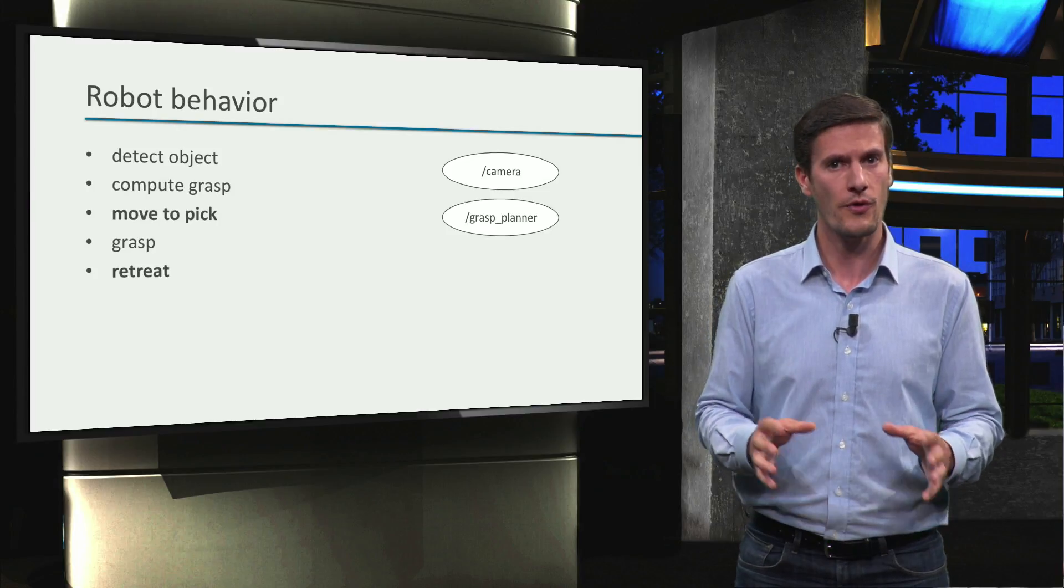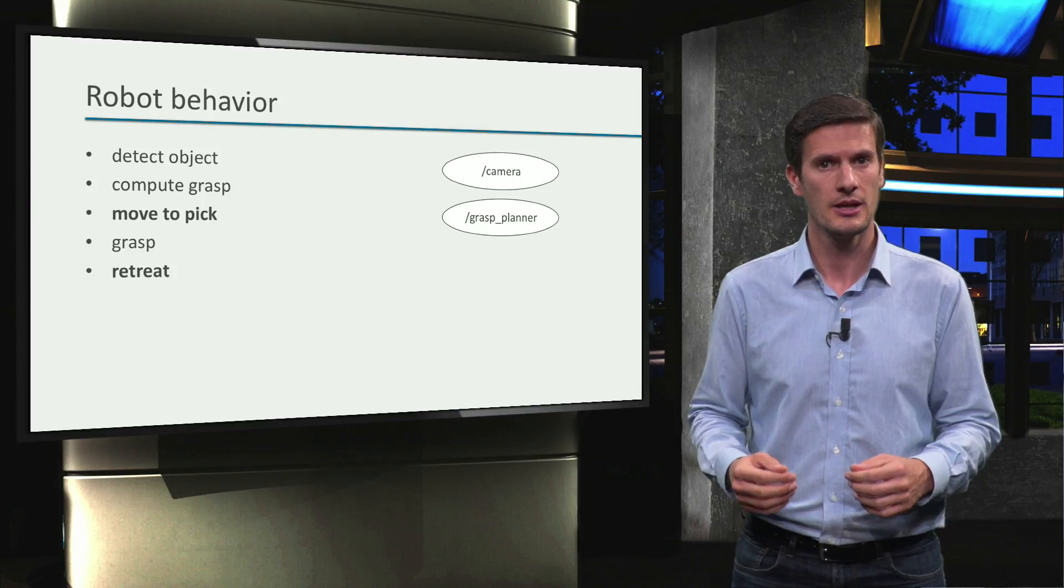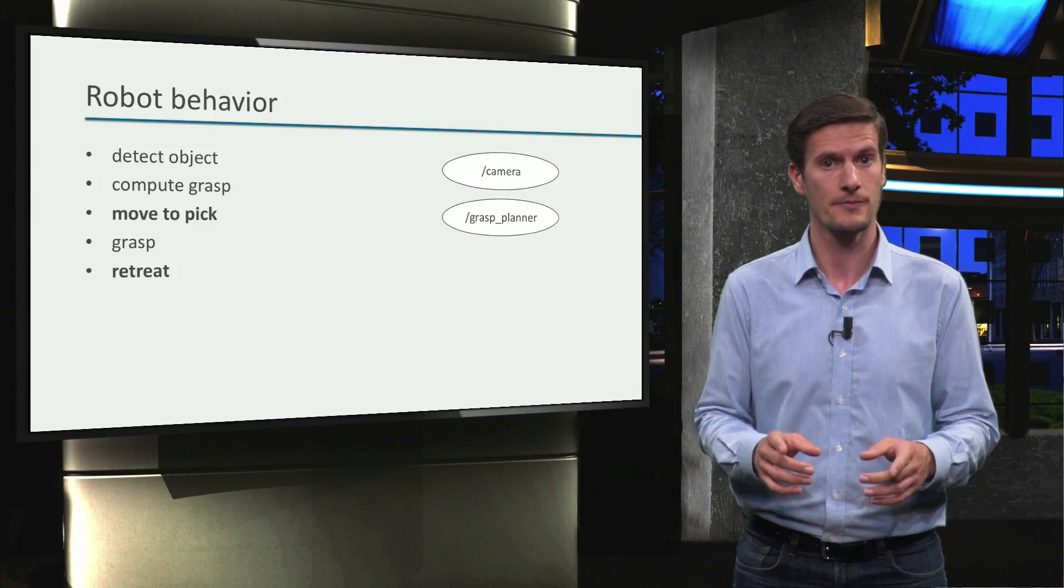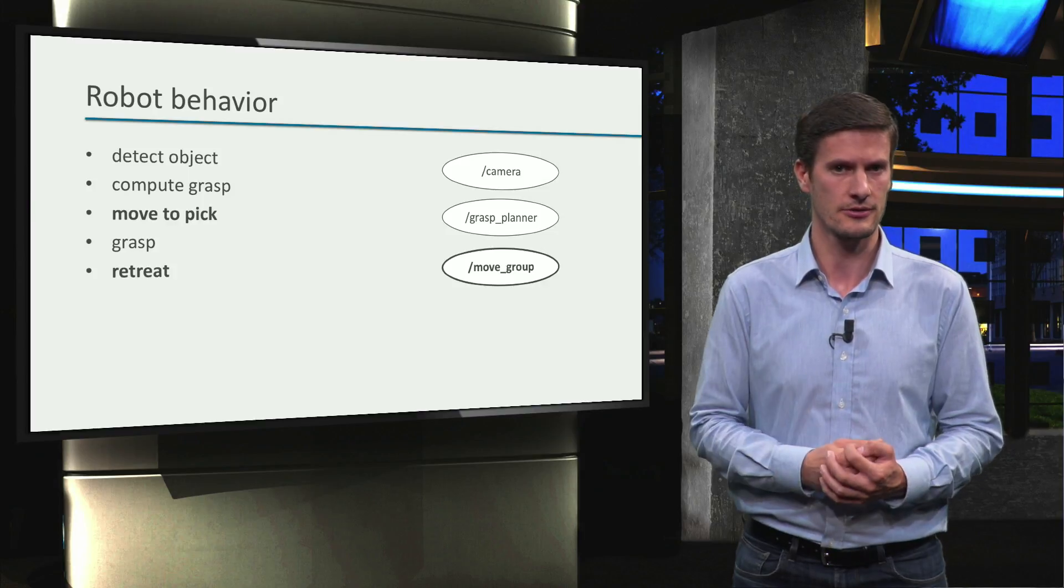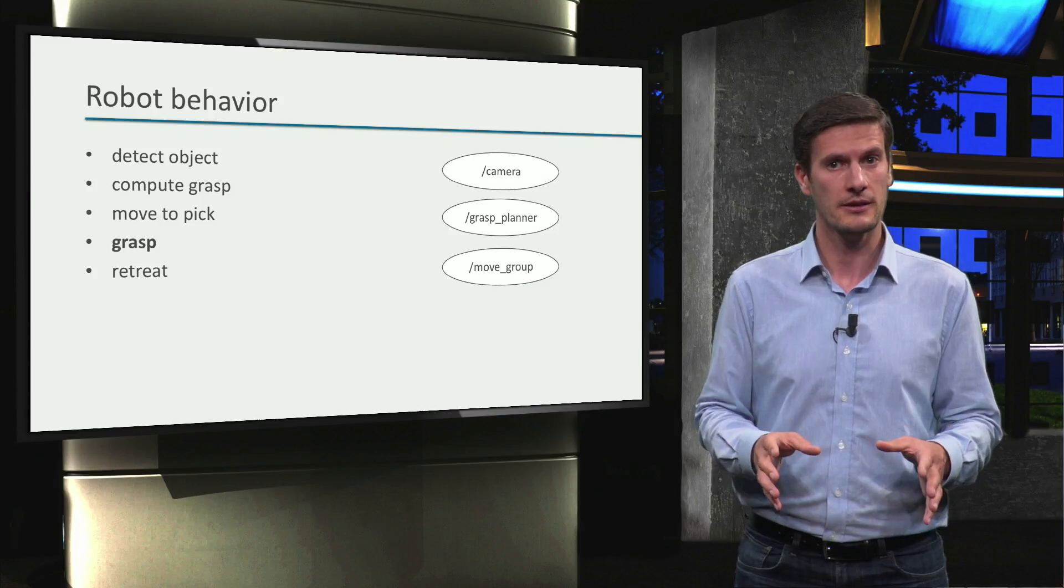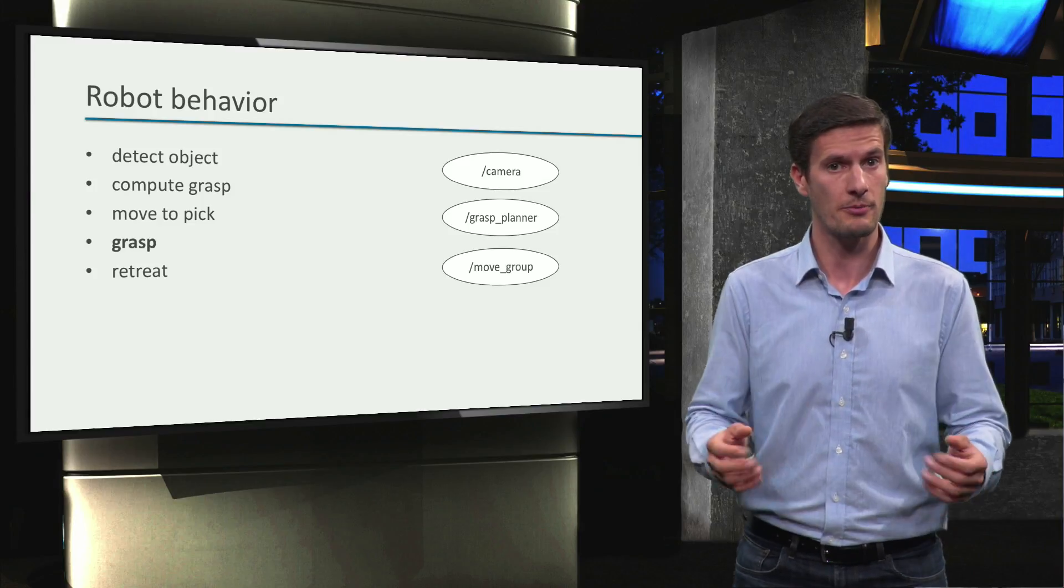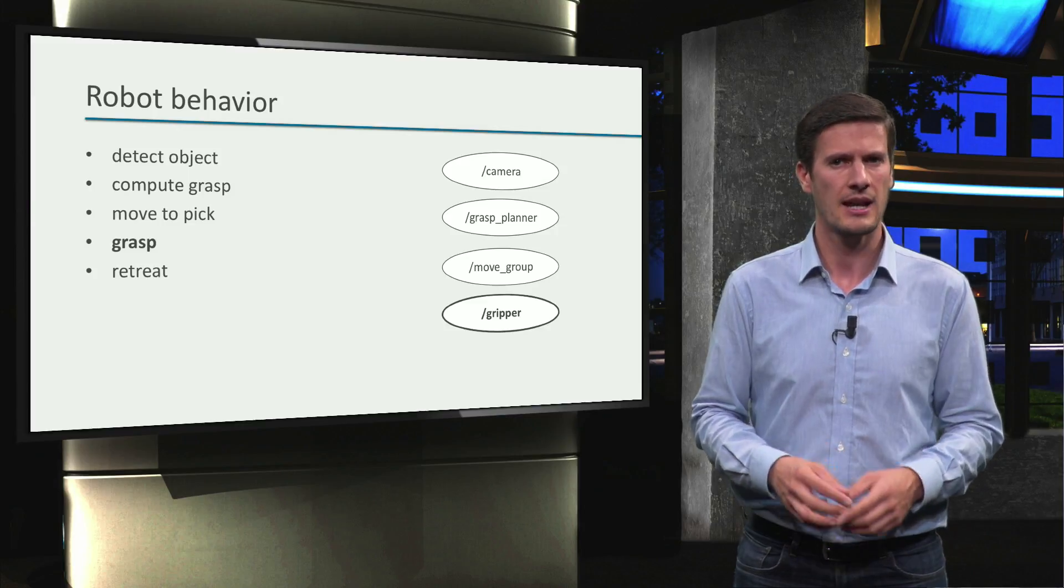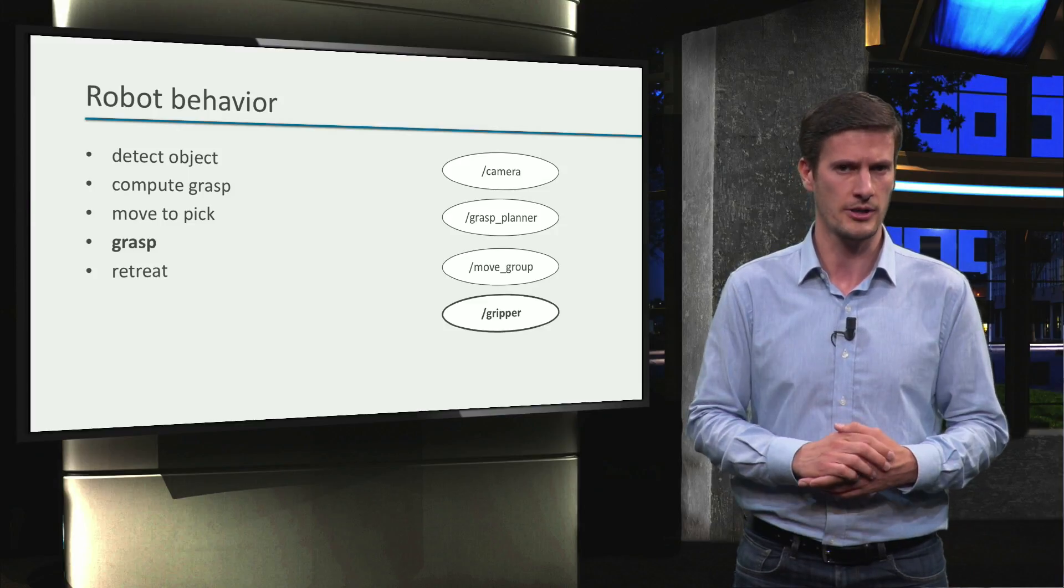For both move actions to pick and retreat, we can use the move it services provided by the move group node, as you have also learned in this course. Finally, for grasping, we need a node that commands the gripper, a gripper driver, typically offering a ROS service for that. Let's assume we also have that component.